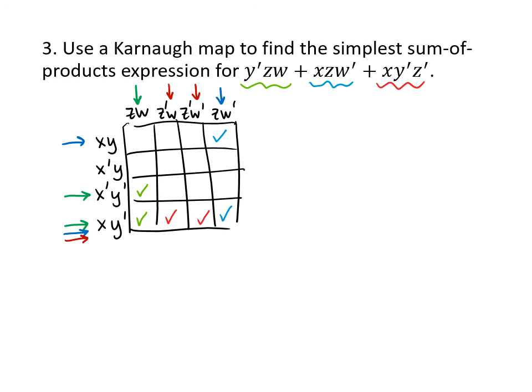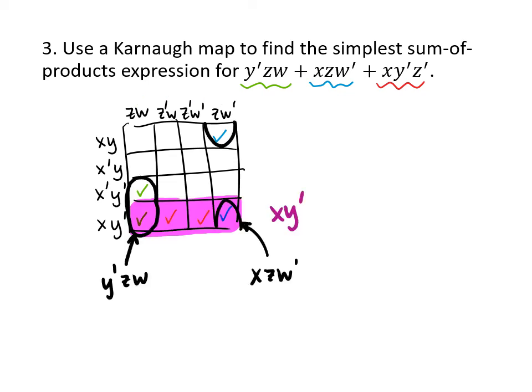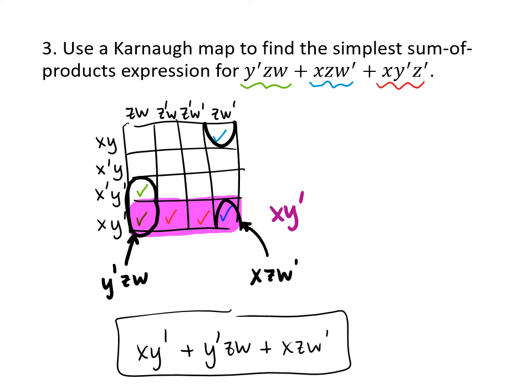Now we want to group these check marks into as large groups as possible. We have a group of four — a one-by-four rectangle — where x appears as x and y appears as y prime, so that's x y prime. Then we've got a couple of extra check marks to include in groups as large as possible. The rectangle on the left has x as either x or x prime, y as y prime, and z w, so that's y prime z w — which was in the original expression. We also have x z w prime, again from the original. The only real simplification was replacing x y prime z prime with x y prime. Sometimes that's as good as you can do. Our final answer is x y prime + y prime z w + x z w prime.